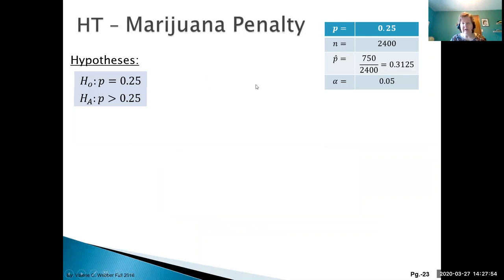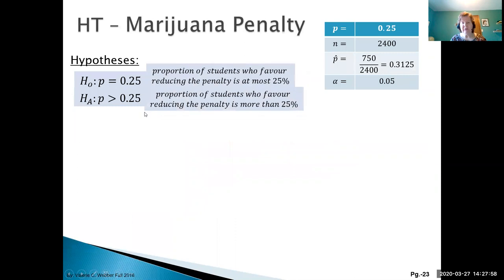Let's put our hypotheses in terms of words: the proportion of students who favor reducing the penalty is at most 25%. The alternative is that it's more than 25%. Even though we have 'at most,' remember the null hypothesis should have just the equal symbol.